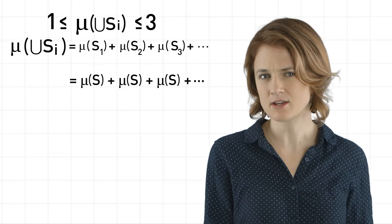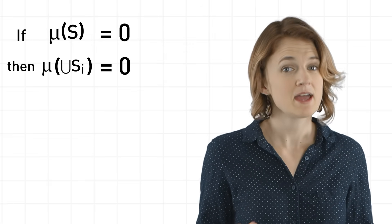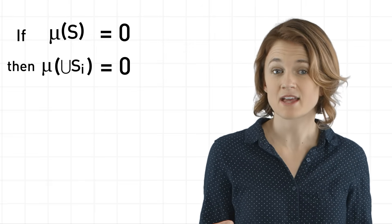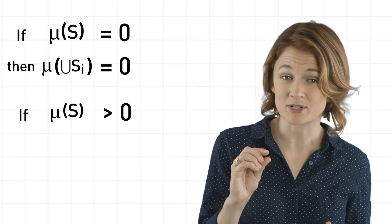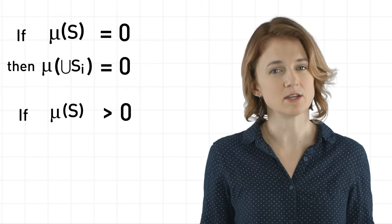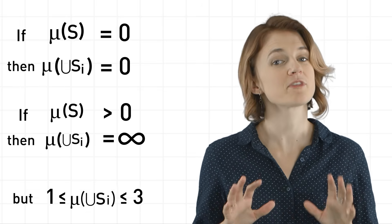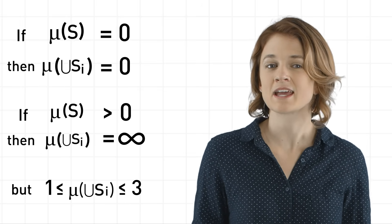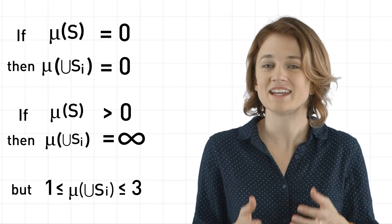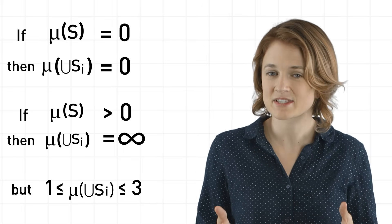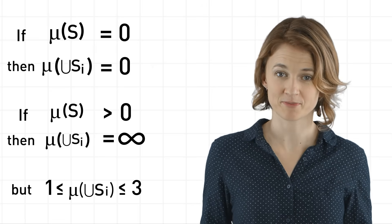This is a problem. We said that the size of the union of all the copies is between 1 and 3. Whatever the size of S is, there's no way to add that number infinitely many times and get a number between 1 and 3. If the size of S is 0, then the infinite sum gives 0. And if the size of S is something positive, even a really tiny number, we'll still get infinity when we add it to itself infinitely many times. Therefore, the size of S can't be 0, and it can't be non-zero. It can't have a size. The set S must be non-measurable.